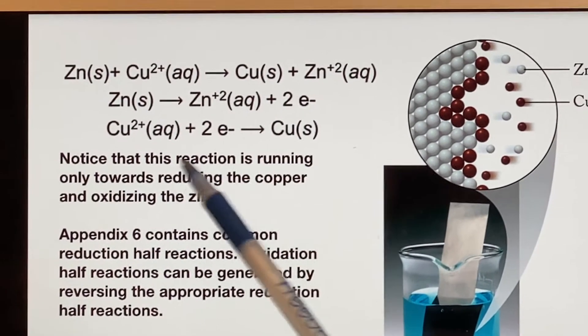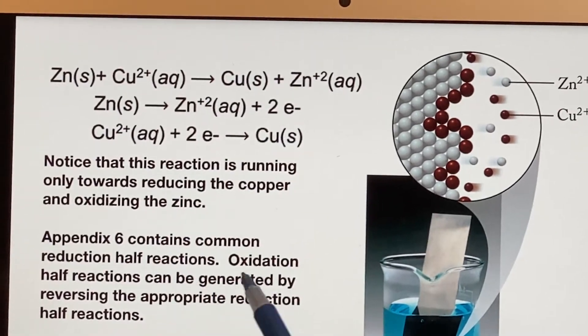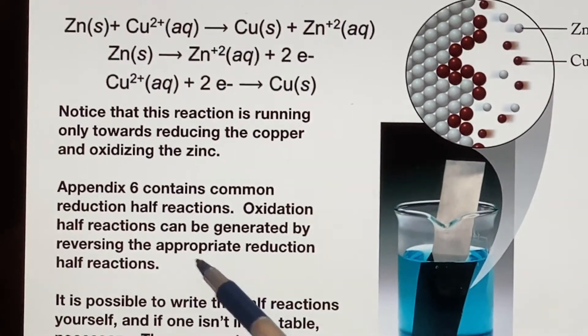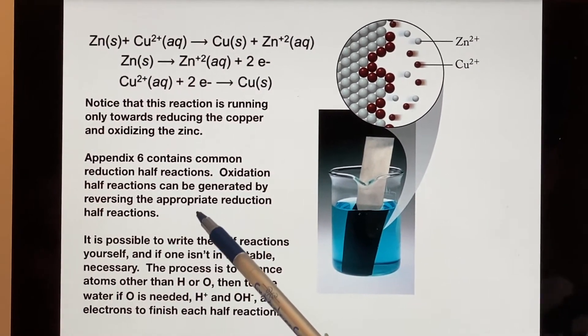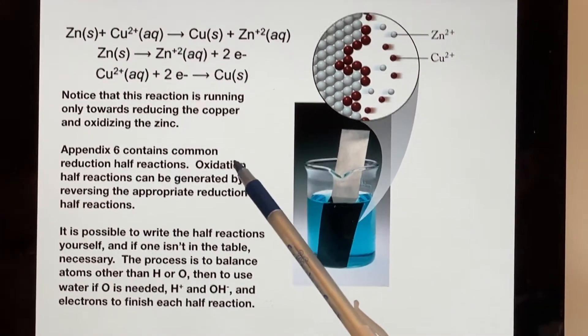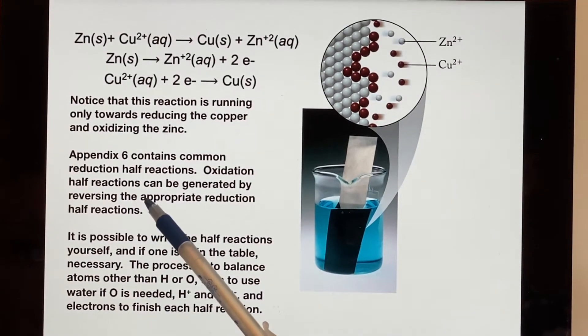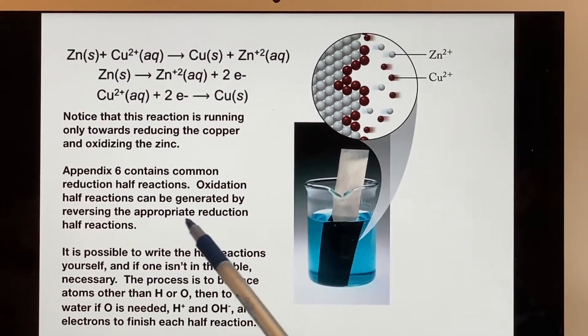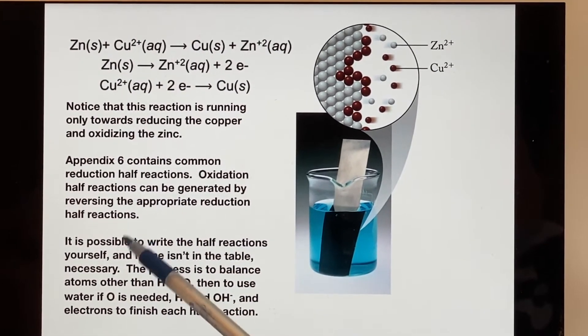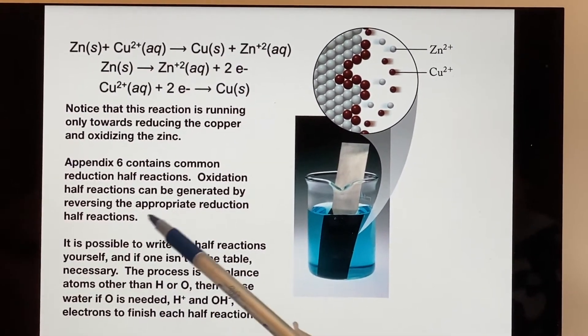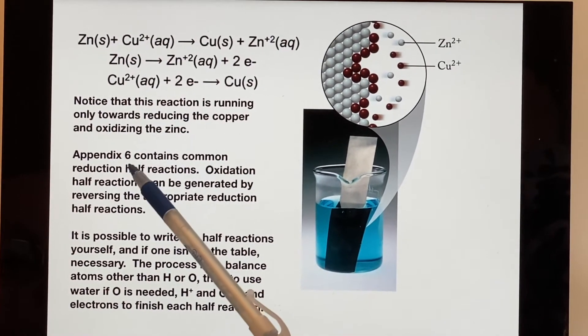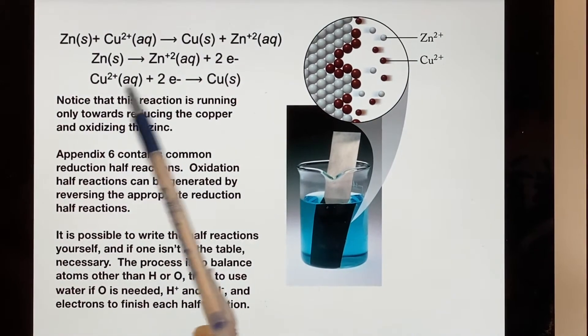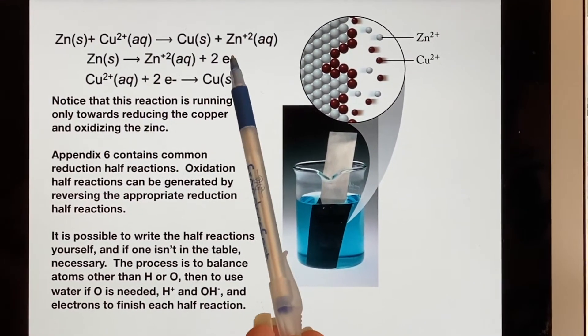If you have to go find these half reactions, appendix six has a bunch of them. It doesn't have all of them, but it has a lot of them. And these oxidation half reactions, they don't have an appendix. How do you get them? You just reverse the reduction half reactions that you find. So you only need one table that has reduction half reactions. If you want to make it into an oxidation, well you just flip it, because what's the difference? The only difference is which side the electrons are on.